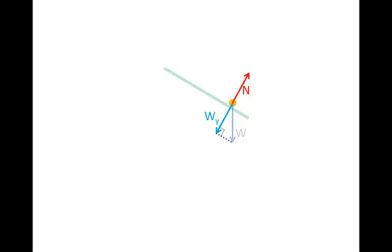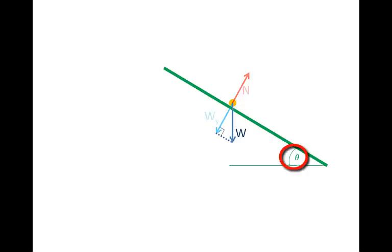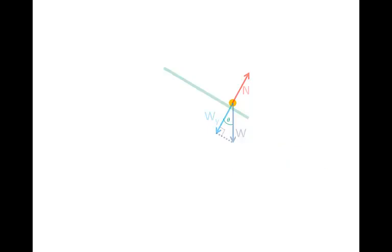So if we can find W's y-component, then we know the normal force's magnitude, because the normal force is equal in magnitude but opposite in direction to W-y. To find W-y, we need to know the slope's angle — let's call it theta. From geometry, you should be able to show that theta, the angle between the slope and the horizontal, is the same angle as the angle between weight W and the y-component of weight, W-y.